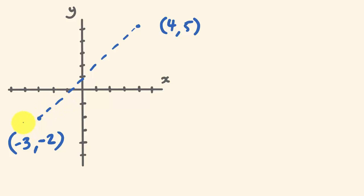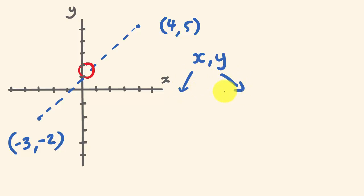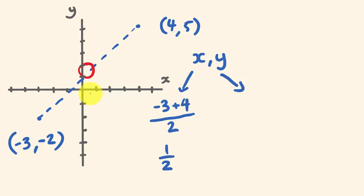What the midpoint formula finds is, if we were to try and find the middle point between these two points, where exactly would it be? The way I think about this, without thinking about a formula so much, is we're after an x, y value. So the first thing we're after is the x value — the middle between these two x values, between minus 3 and 4. If we want to find the point between these, we add them together and divide by 2. So minus 3 plus 4 is 1, divided by 2 is one half. And that's going to be our x value.